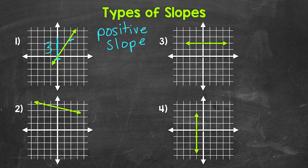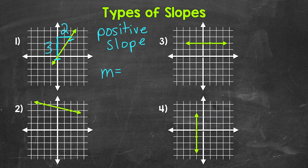Now we need the run — the horizontal change. We go over one unit, two units, and we are at the other point. So our run is positive two, since we went to the right. We can write our slope as M equals rise over run. So M equals three over two. The slope of this line is three halves — our first type of slope: positive slope.